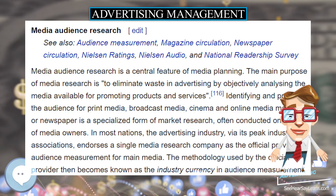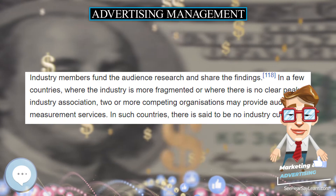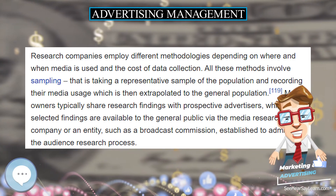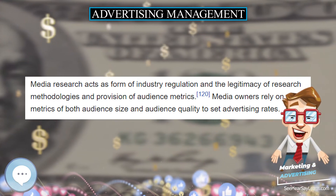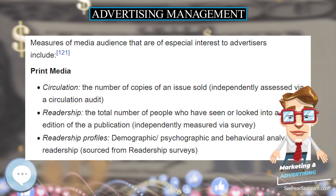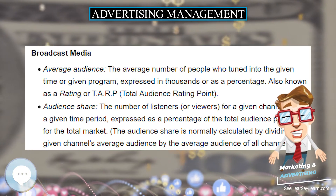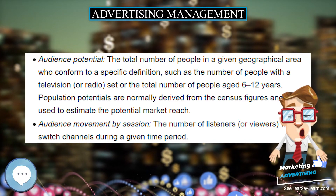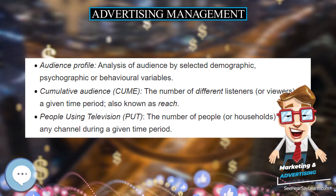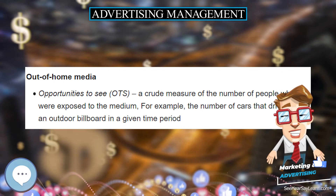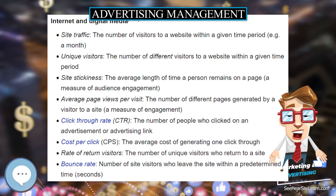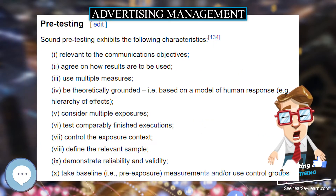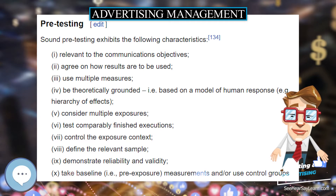Communications objectives will depend on whether the marketer is using a push or pull strategy. In a push strategy, the marketer advertises intensively with retailers and wholesalers, with the expectation that they will stock the product and consumers will purchase it in stores. In a pull strategy, the marketer advertises directly to consumers hoping they will put pressure on retailers to stock the product, pulling it through the distribution channel. A push strategy uses trade advertising and sales calls weighted towards trade magazines, exhibitions, and trade shows, while a pull strategy makes more extensive use of consumer-oriented advertising weighted towards mass market media.